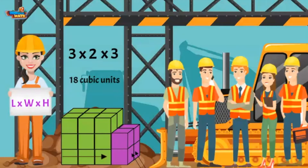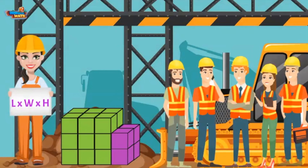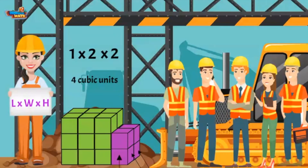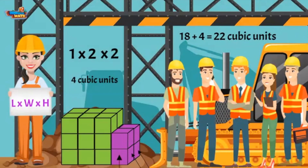Now I will find the purple model and then add the two together. The purple model has a length of one cube and a width of two cubes — one times two equals two. There are two layers of two, which equals four. We add four to the green model's volume of 18 for a total answer of 22 cubic units.